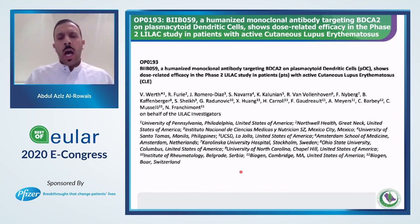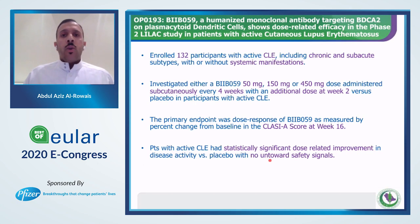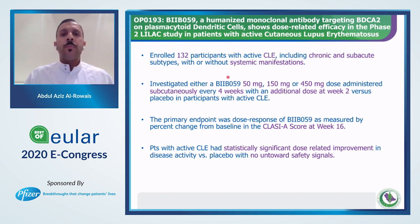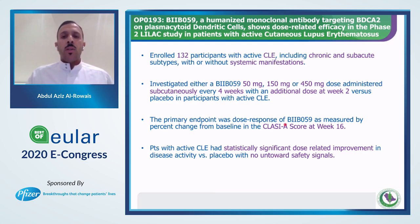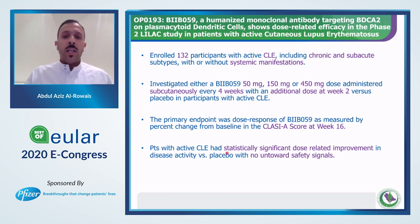The results of the phase 2 trial for the anti-BDCA2 antibody were presented at this EULAR meeting. They used it in 132 patients with cutaneous lupus erythematosus including chronic and subacute subtypes with or without systemic manifestations, investigating doses of 50 mg, 150 mg, and 450 mg subcutaneously every four weeks with an additional dose at week two. The primary endpoint was dose response as measured by percent change from baseline in CLASI score at week 16. Patients with active cutaneous lupus erythematosus had statistically significant dose-related improvement in disease activity versus placebo with no untoward safety signals.